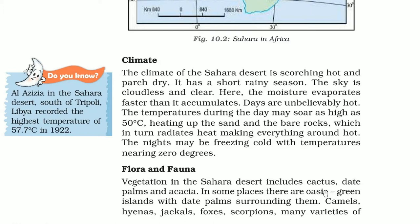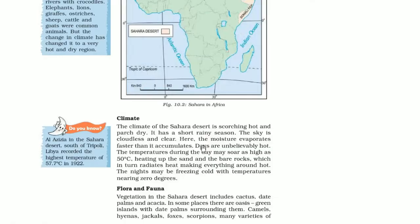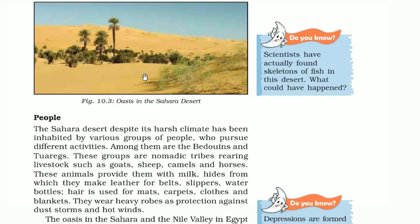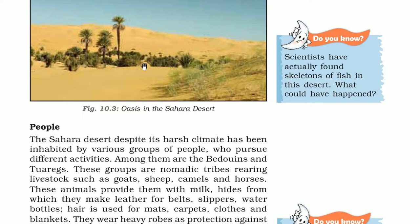The vegetation in the Sahara Desert includes cactus, date palms and acacia. In some places there are oases - green islands with date palms surrounding them. Animals found here include camels, hyenas, jackals, foxes, scorpions and many varieties of lizards and snakes. Scientists have actually found skeletons of fish in this desert, which means there would have once been a great amount of water here.